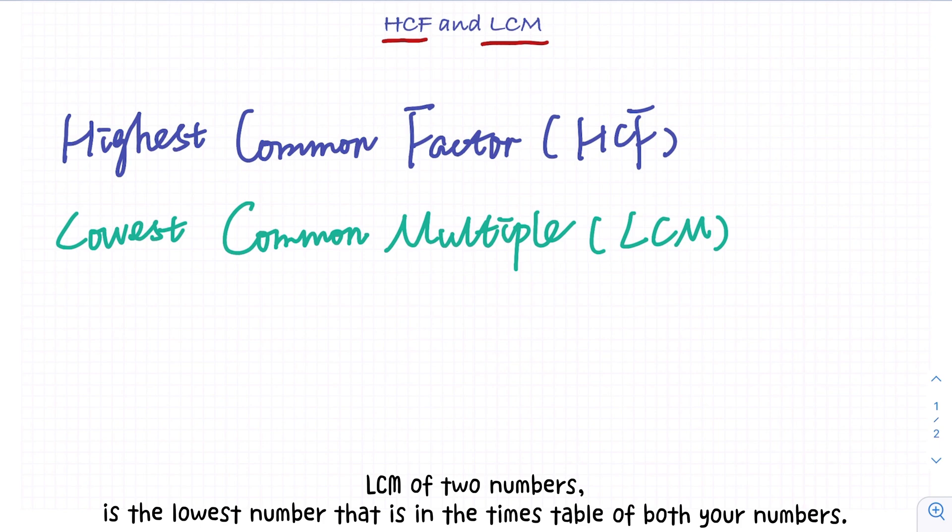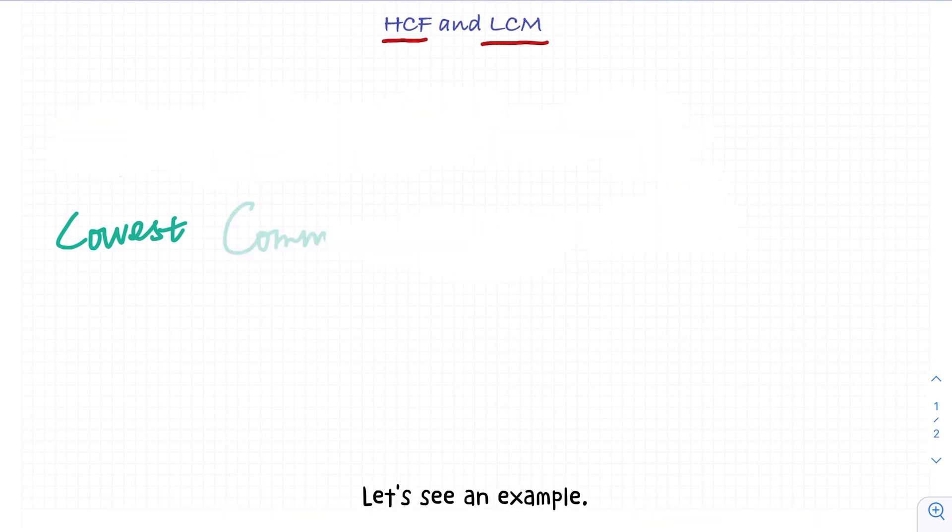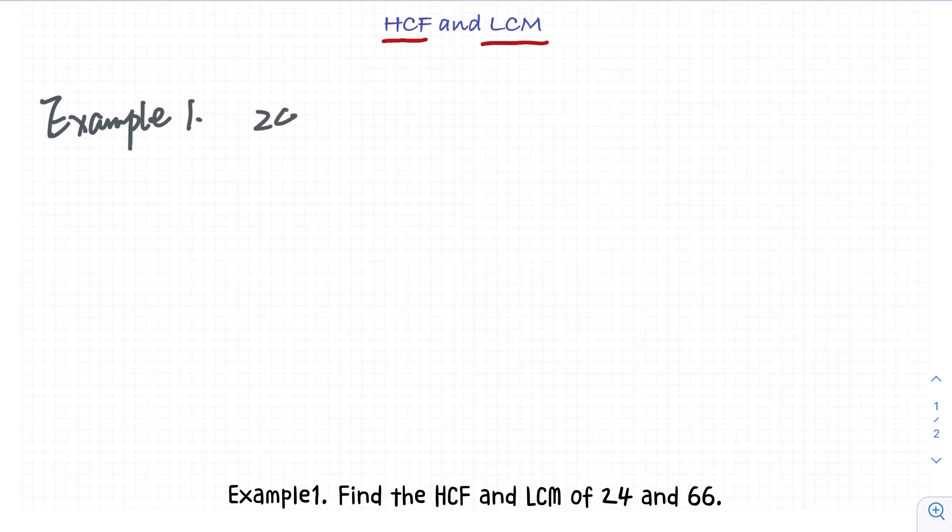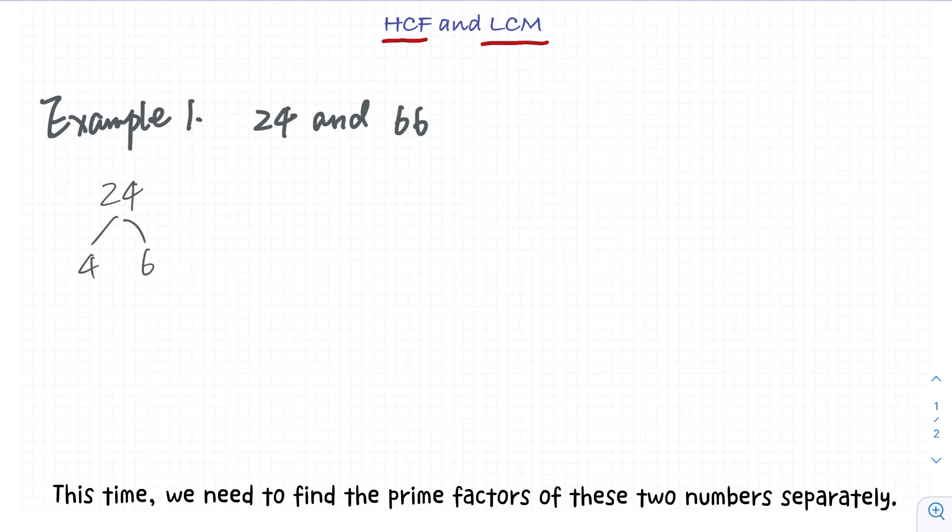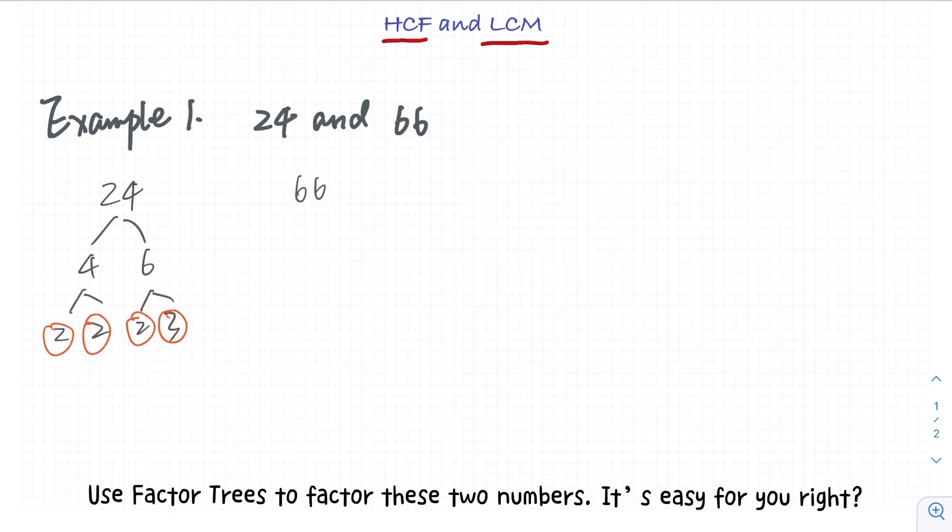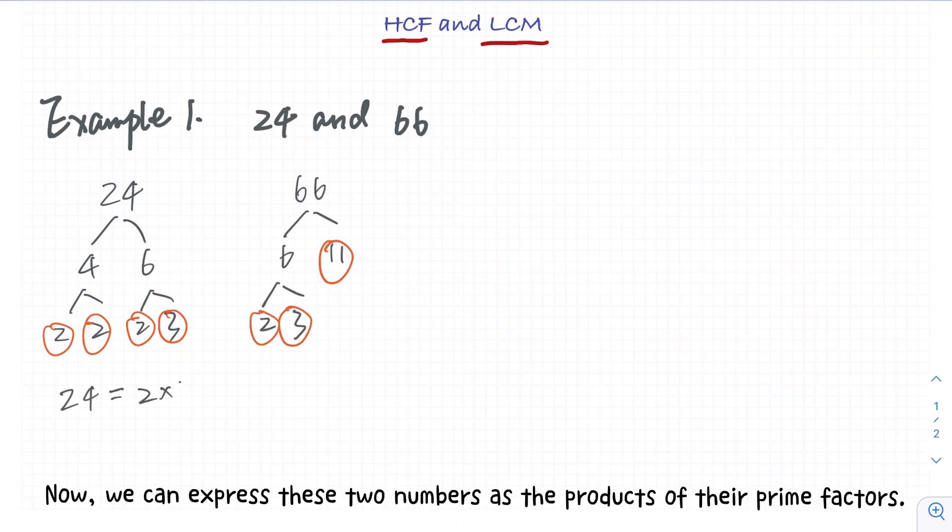Let's see an example. Example 1: find HCF and LCM of 24 and 66. This time we need to find the prime factors of these two numbers separately. Use factor trees to factor these two numbers. It's easy for you, right? Now we can express these two numbers as the products of their prime factors.